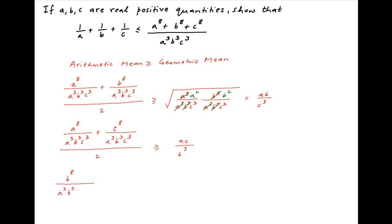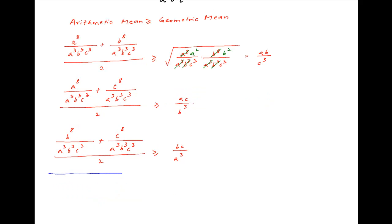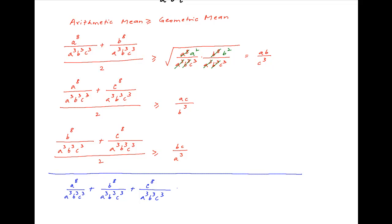And finally, b raised to the power 8 upon a³b³c³ plus c raised to the power 8 upon a³b³c³, divided by 2, is greater than or equal to bc upon a³. Adding these three inequalities, on the left-hand side we get a⁸ + b⁸ + c⁸ upon a³b³c³, which is greater than or equal to ab/c³ plus ac/b³ plus bc/a³. Let's call this Result 1.